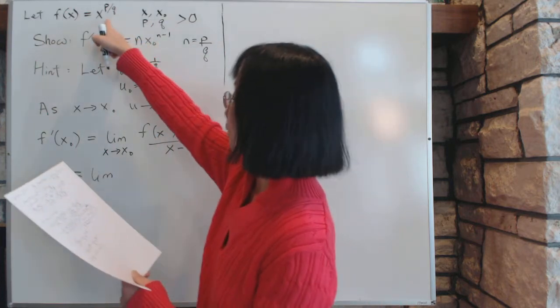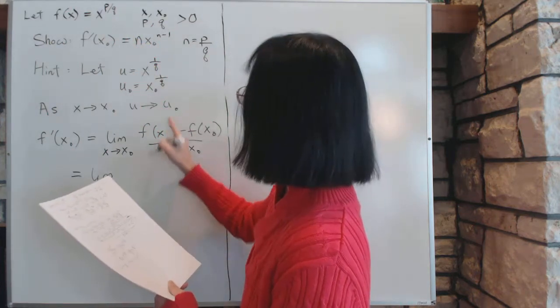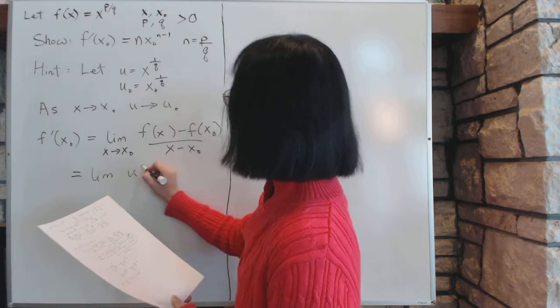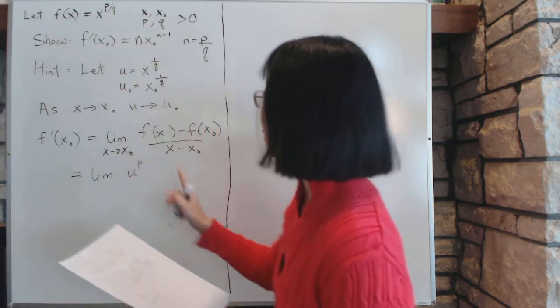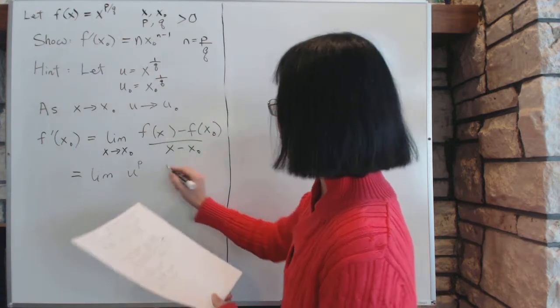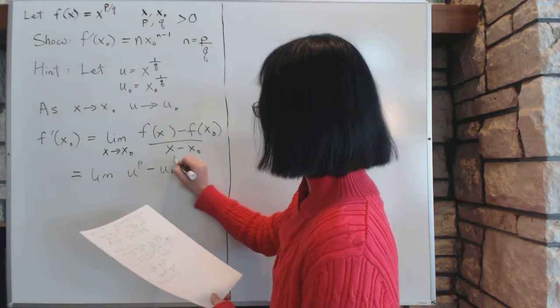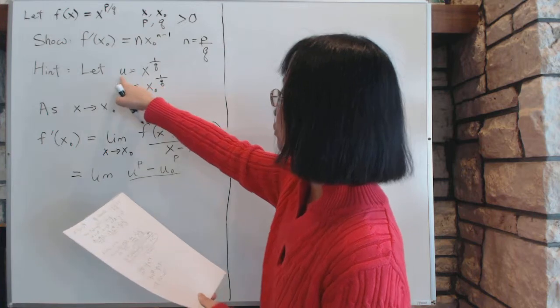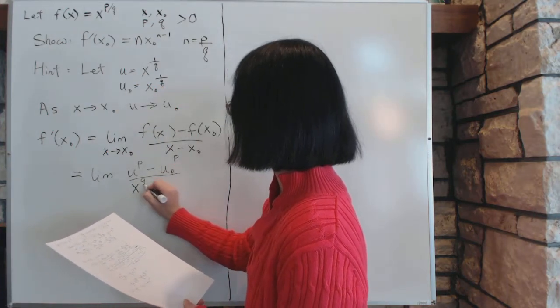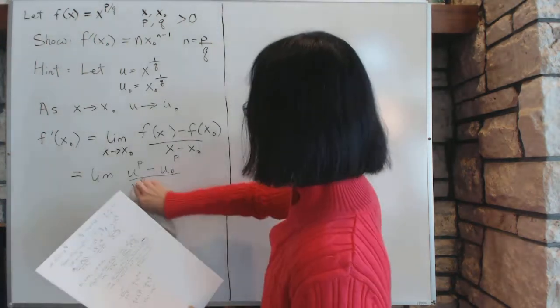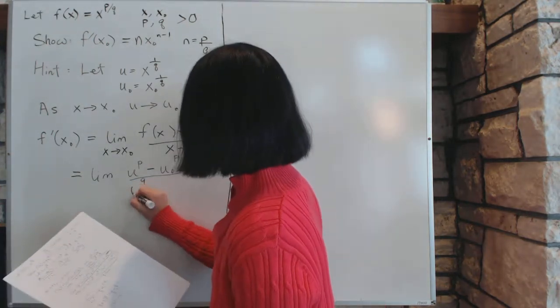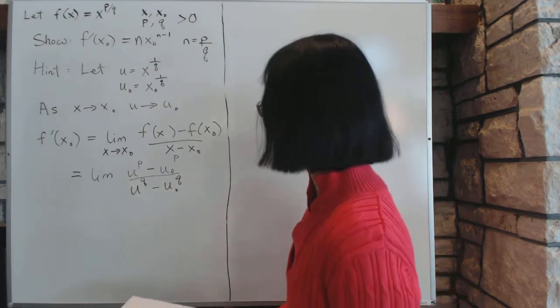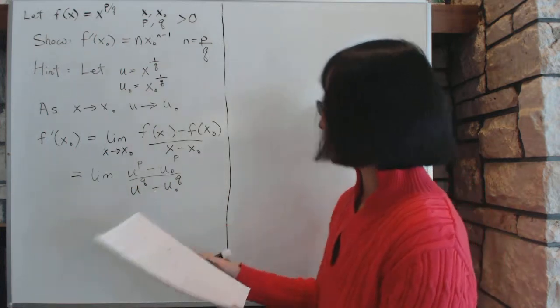So this is the limit of f(x), which is this thing right here. So if we substitute u, then it will be u to the power p, because of the definition of what f(x) is and the definition of u. So u^p minus u0^p divided by, and what is x? Well, x is just u to the power q. So we have this, the limit of this thing.